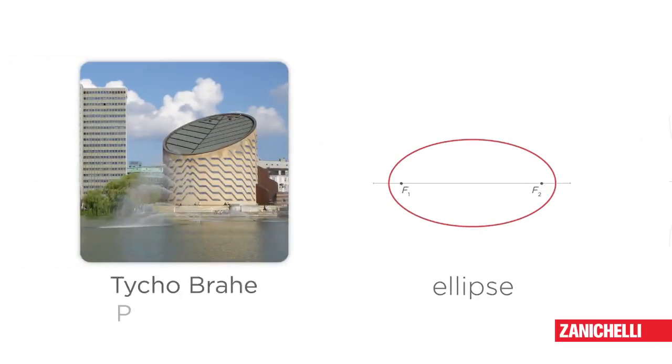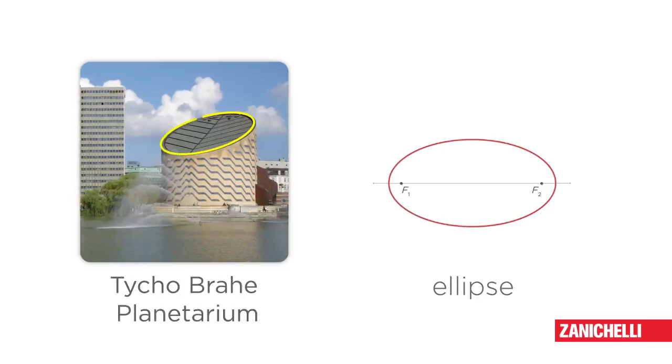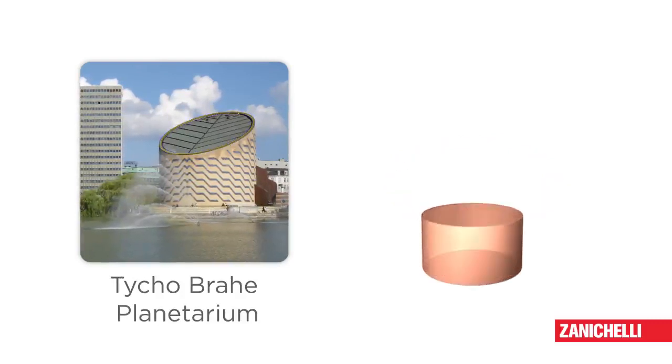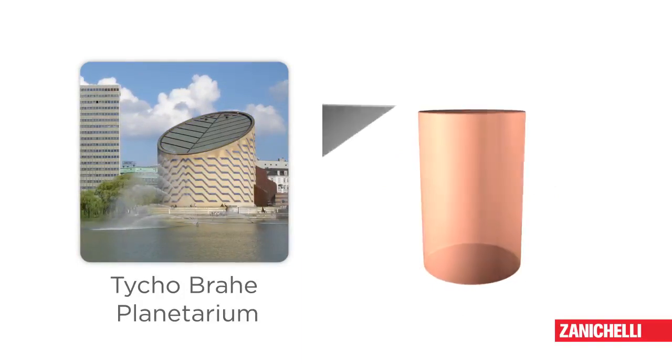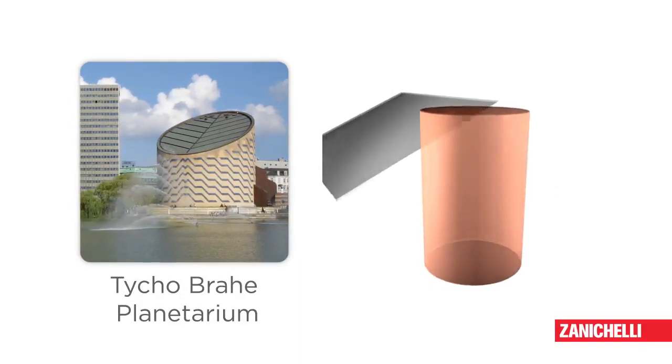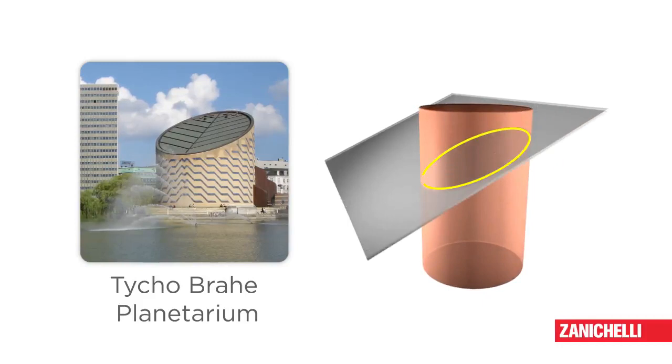Talking about ellipses, can you recognise the ellipse in the Tycho Brahe Planetarium in Copenhagen? In fact, the ellipse can be correctly obtained also by sectioning a cylinder and not a cone. Now we can't speak about ellipses without mentioning the orbits of planets, which were recognised as ellipses by Kepler.